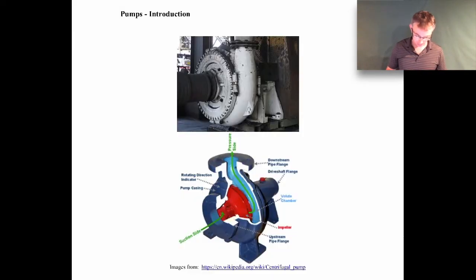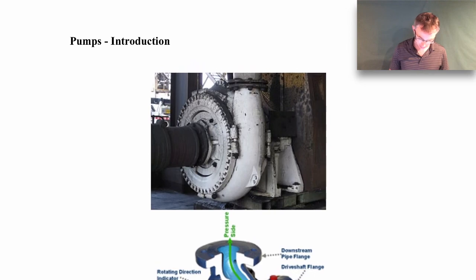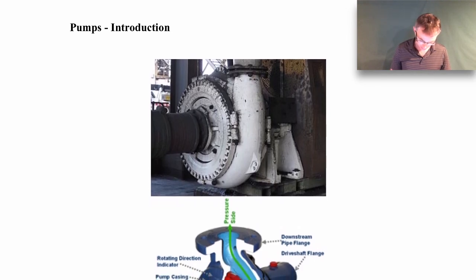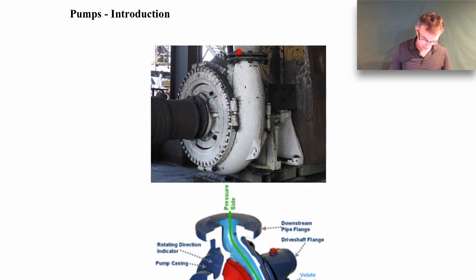The picture here is of a centrifugal pump, and this is the kind of pump we'll spend pretty much all of our time on in this course. Here's a picture of it looking at it from the outside. You've got an inlet where liquid would come into this pump, and it would swirl and be thrown out to the outside, swirling around and then come out through what's called the volute casing, and then go out through the top.